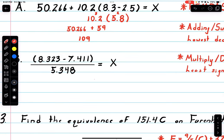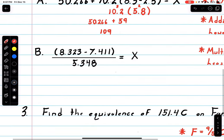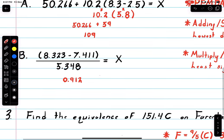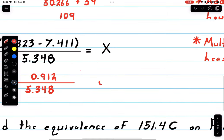Moving on to the next one, we have somewhat of the same problem. Let's start all over with PEMDAS. On the top I come out with (8.323 - 7.411) = 0.912. Remember with adding/subtracting, the lowest decimal place—that's what the calculation came out to be—so we're fine with that, over 5.348. This is division.